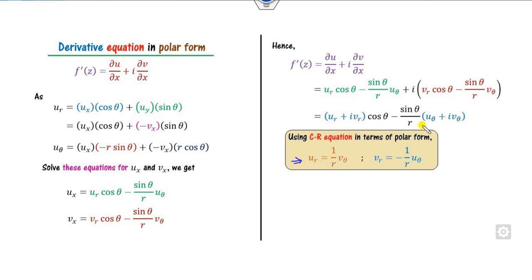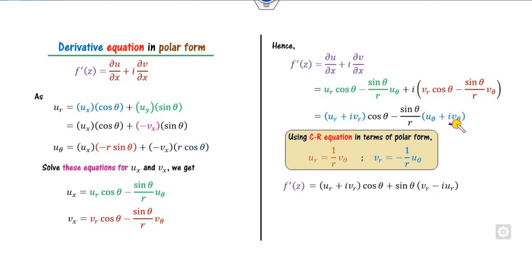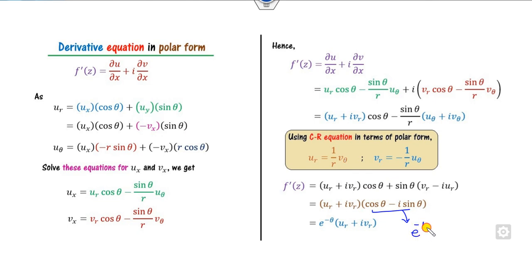After substituting the values of u_r, v_r, u_theta, and v_theta using the CR equations — converting all v terms into u terms — and separating real and imaginary components, the final derivative expression in polar coordinates is: f'(z) equals e^(minus i theta) times (u_r plus i v_r). This is the derivative formula expressed in polar coordinates.